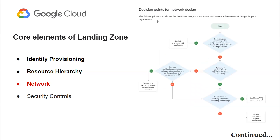The third core element is network, which involves designing the network topology, creating virtual private clouds, subnets, and firewall rules. A well-defined network secures the environment and enables efficient communication between resources.